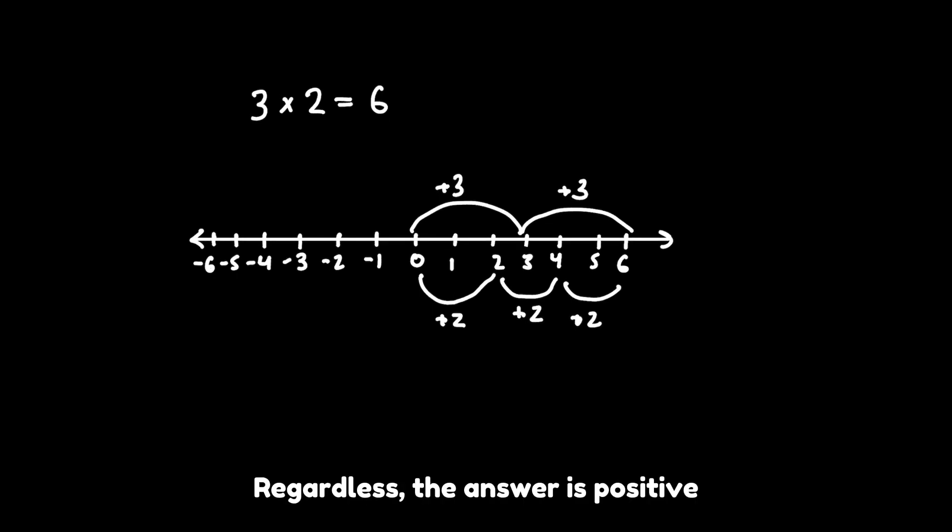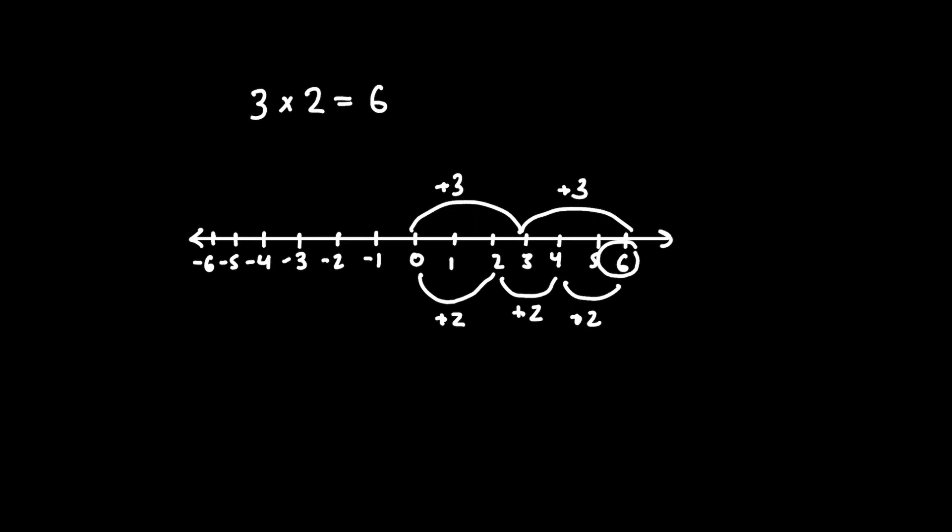Regardless, the answer is positive and on the right side of the number line. Now, let's look at a similar example: negative 3 times 2 on a number line.